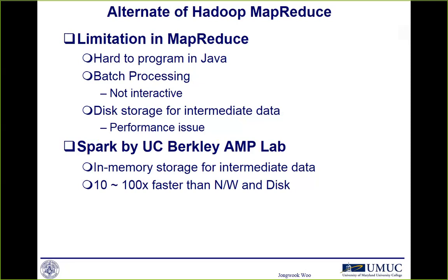Fortunately, UC Berkeley AMP Lab implemented Spark. There is in-memory storage, so intermediate data generated from each stage is stored into memory. In theory, Spark is 10 to 100 times faster than Hadoop MapReduce. I'm glad many of you answered that question correctly.